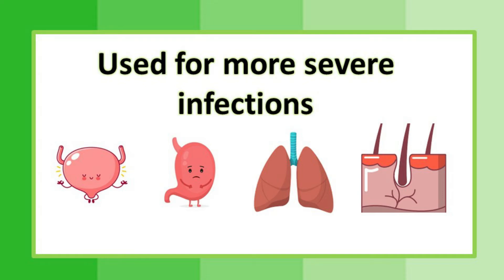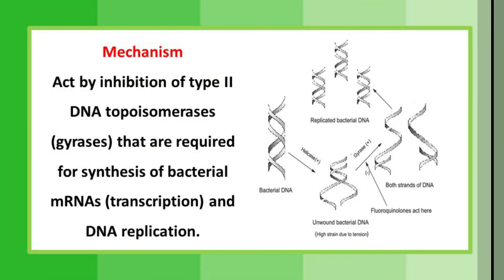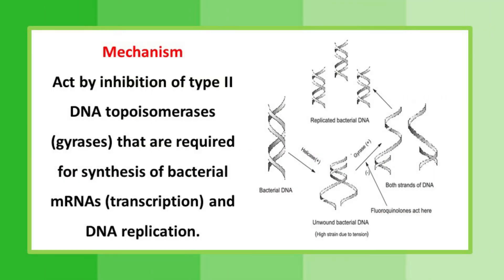Ciprofloxacin is also used for bone and joint infections. The mechanism of action is that fluoroquinolones inhibit type 2 DNA topoisomerase enzymes — that is, DNA gyrases — which are required for synthesis of bacterial mRNAs and DNA replication. In simple terms, fluoroquinolones target DNA and replication of the bacteria.